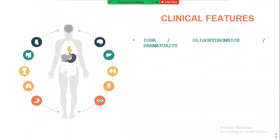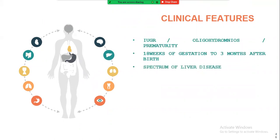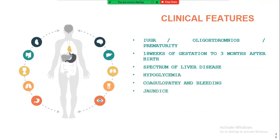Clinical features: the child may present with IUGR, oligohydramnios, or prematurity. Liver failure can present anywhere from 18 weeks of gestation to three months after birth, with a spectrum ranging from simple hepatitis to fulminant liver failure or cirrhosis. Hypoglycemia, coagulopathy, bleeding, jaundice, edema, and hypoalbuminemia are all features.